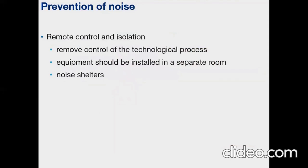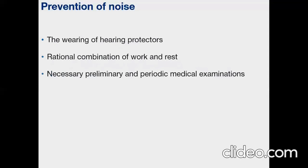Another group of preventive measures is remote control and isolation. The remote control of the technological process must be used and the process should be monitored with the aid of remote indicating displays. The equipment should be installed, if possible, in a separate room to reduce the number of workers liable to be exposed. There should be noise shelters close to the workplace, hermetically closed with air conditioning if necessary or open on one side. The last group includes wearing appropriate hearing protectors, rational combination of work and rest, and necessary preliminary and periodic medical examinations.